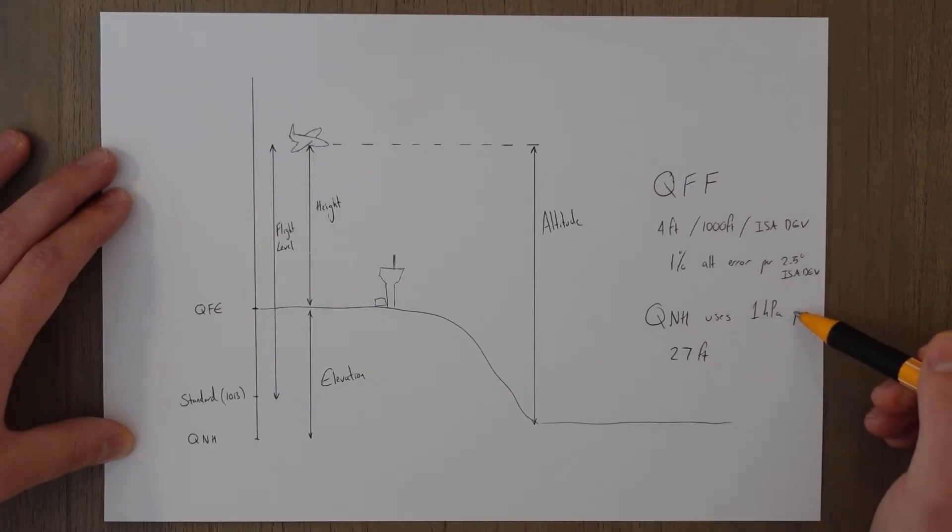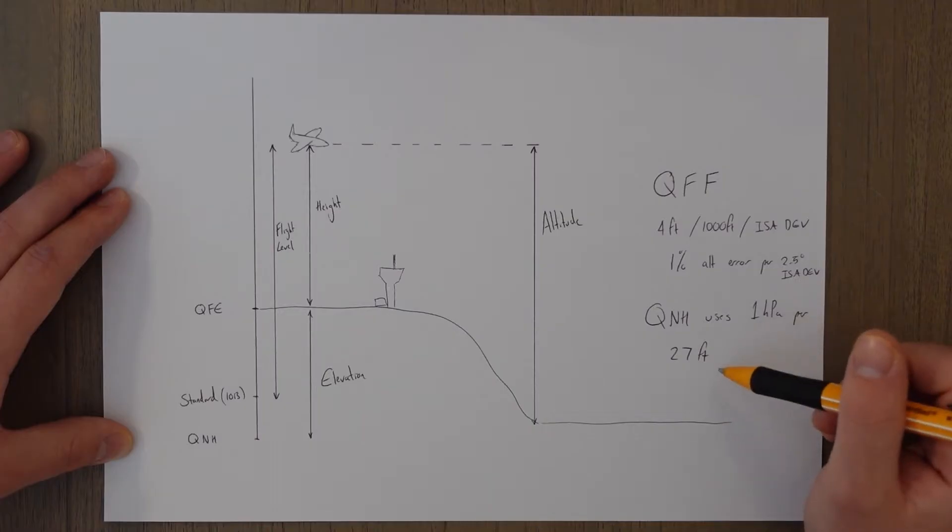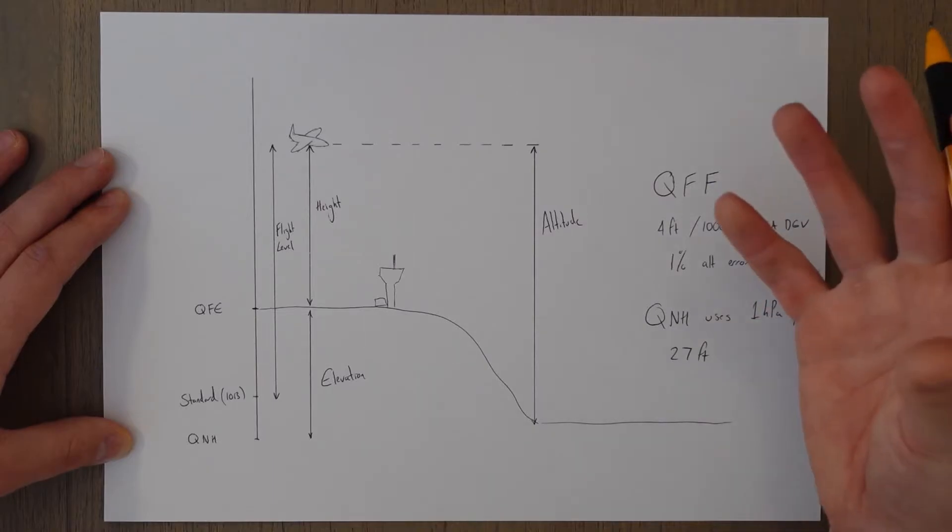QNH is using 27 feet per hectopascal and the QFF is factoring in this temperature correction in order to give us a different lapse rate. So you'll get the more accurate sea level pressure for that day when using QFF, which is why meteorologists like to use it because it's better for predicting weather.